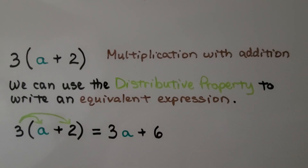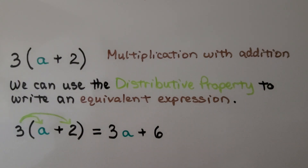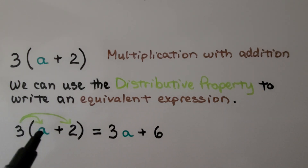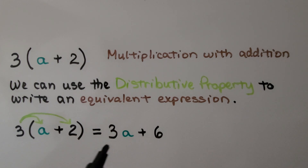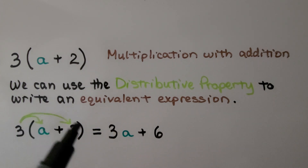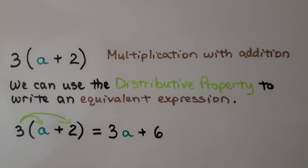Here we have multiplication with addition: three times (a plus two) in parentheses. We can use the distributive property to write an equivalent expression. We write three times a as 3a, plus three times two, which is six. So we can write 3a plus six.